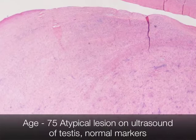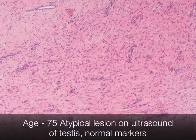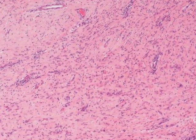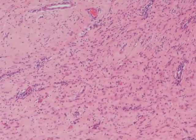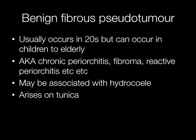This is an example of a benign fibrous pseudotumour. They occur in the twenties but can occur across a wide age range from children through to the elderly. There are numerous other names for this condition including reactive periorchitis, chronic periorchitis and fibroma, just to name three. Benign fibrous pseudotumours may be associated with a hydrocele, and they arise on the tunica.